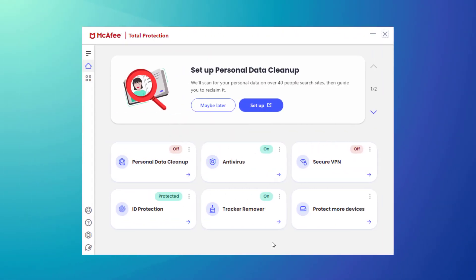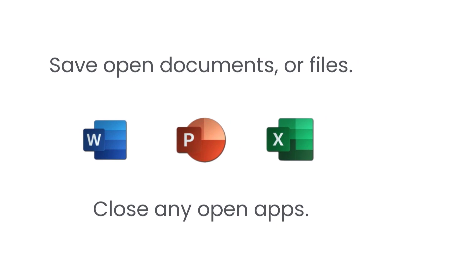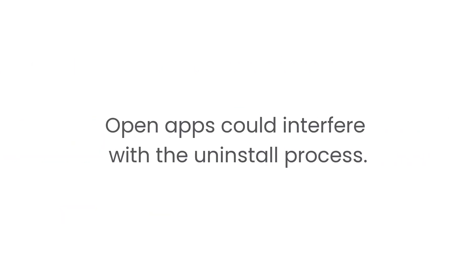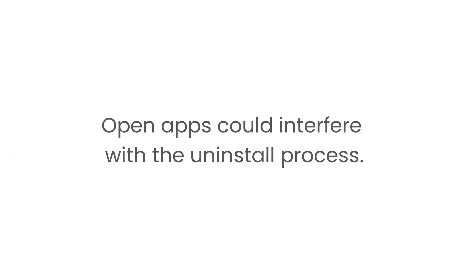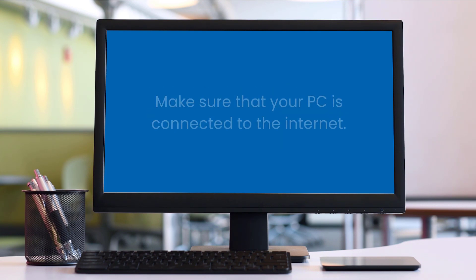At some point, you might need to remove your McAfee software from your Windows PC. Here's how. First, save all open documents and close as many apps as you can. Having lots of apps open could interfere with the uninstall process. Also, the uninstaller talks to our backend servers to release the license for the app that you're removing. So, make sure that your PC is connected to the internet during the uninstall process.